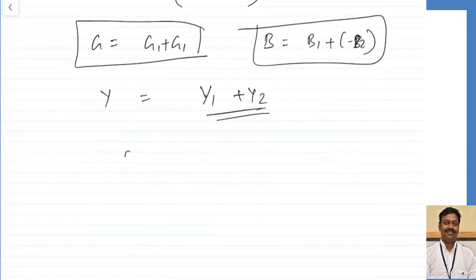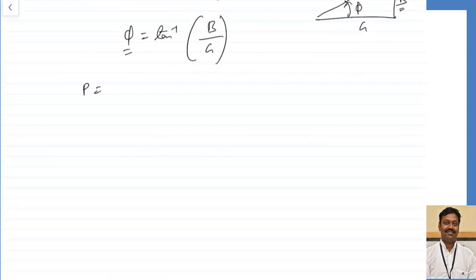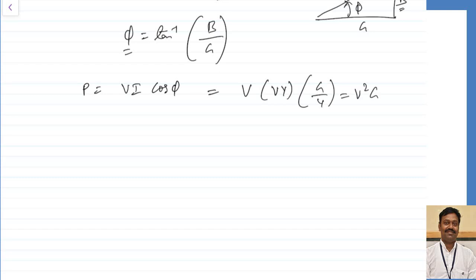The phase angle is calculated as tan inverse of B divided by the real component G — whether the angle is positive or negative depends on whether B is positive or negative. If B is negative, the angle is negative; if B is positive, the angle is positive. Power P can be calculated as V into I into cos phi, which simplifies to V squared into G.